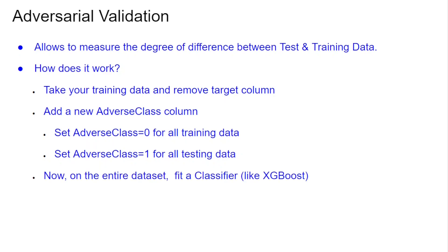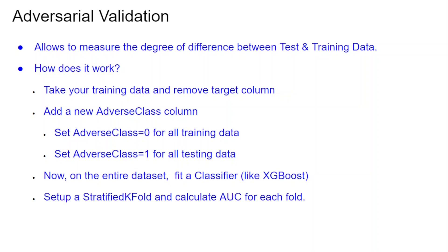Now on the entire dataset, we will run a classifier — like XGBoost, Random Forest, whatever your favorite classifiers are. Then we are going to set up a stratified k-fold to calculate the area under the curve for each fold.